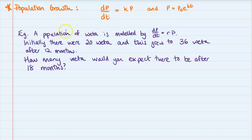Here's an example of how we use it. So a population of Weta is modeled by this equation here. So dp by dt is equal to rp. Now we could have alternate letters used like this. So instead of it being a k, we might be using a different letter like r for rate. So the rate of change of that population is proportional to the population itself. And then we're given some other information that there were 20 weta to begin with. This grew to 36 weta after 12 months. And then we want to work out how many weta would you expect there to be after 18 months. If you don't know what a weta is, it's a type of insect found in New Zealand. Google it.